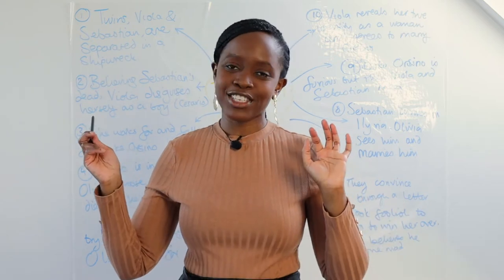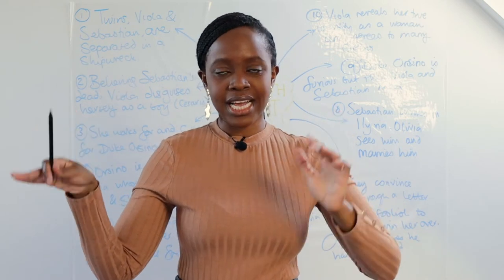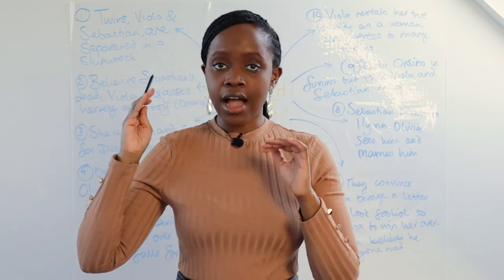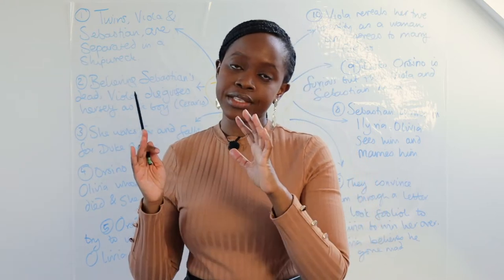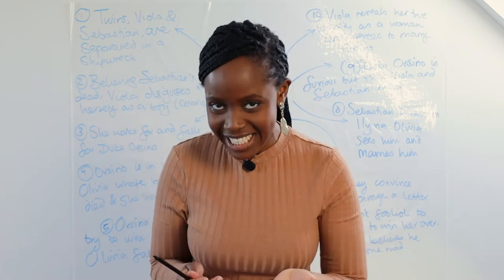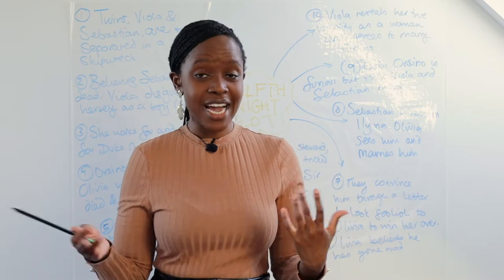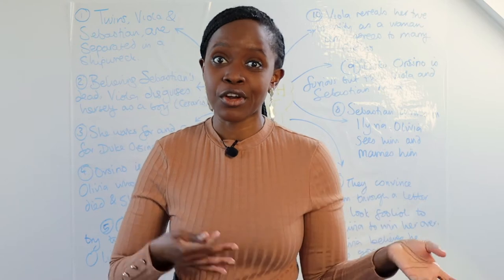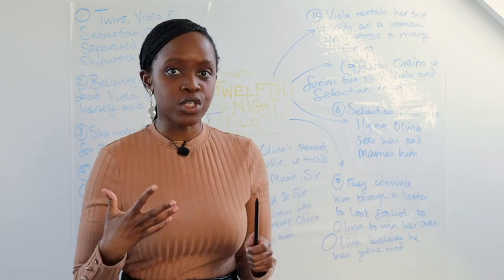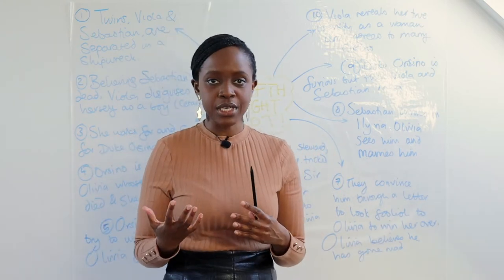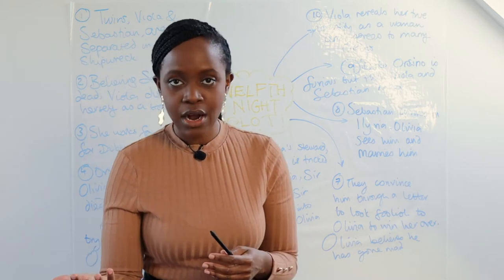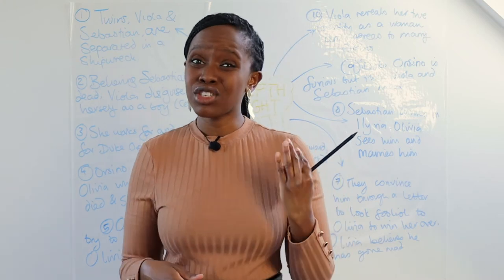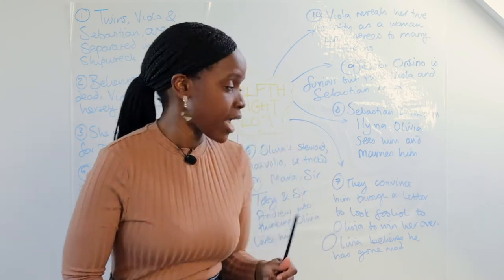Olivia completely forgets the vow she made to have no male suitors while mourning her brother. She switches from being anti-Orsino to actually wanting Cesario to marry her — not knowing she's talking to Viola, a woman. Viola is stuck between a rock and a hard place: she can't reject Olivia outwardly, but she needs Olivia to accept Duke Orsino's hand.